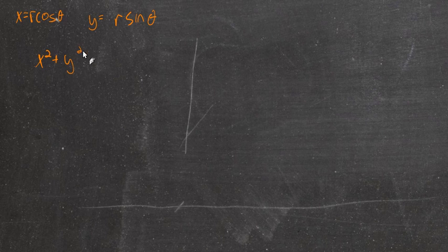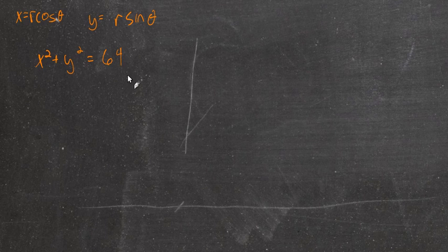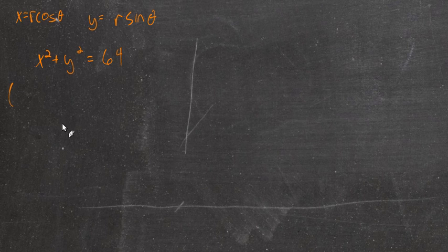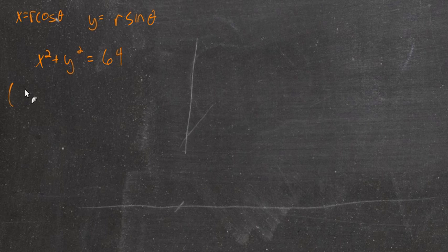So let's take the example: x² + y² = 64. From our experience with conic sections, we should recognize this as the equation of a circle with its center at the origin and a radius of 8. If we just use these substitutions, we can simplify it, solve for r, and find a polar equation rather than a rectangular equation like this is.